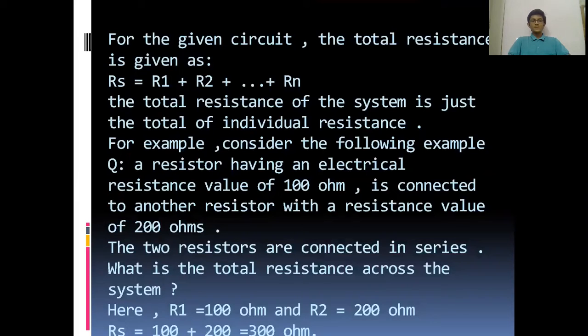For example, consider the following: a resistor having an electrical resistance value of 100 ohms is connected to another resistor with a resistance value of 200 ohms. The two resistors are connected in series. What is the total resistance across the system? Here, R1 = 100 ohms and R2 = 200 ohms, therefore Rs = 100 + 200 = 300 ohms.